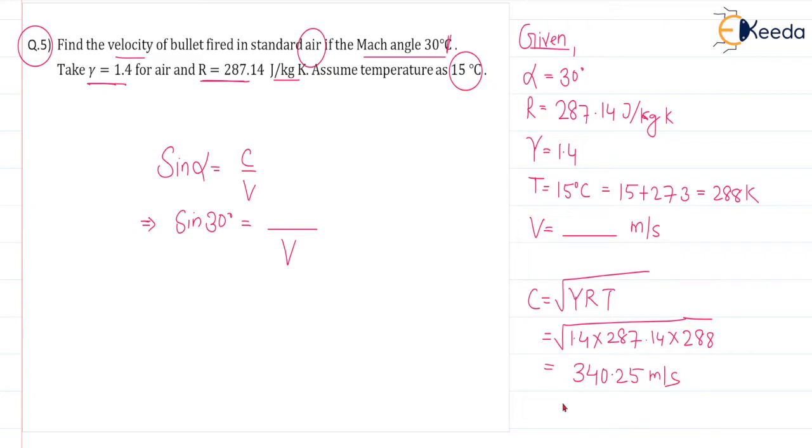Substitute this value in the main equation. 340.25 meter per second, sine 30 equal to, so V is equal to